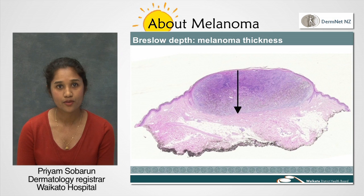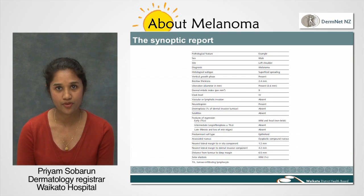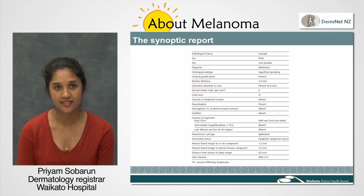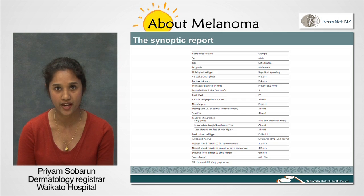The report written by the pathologist is called a synoptic report. It presents information in a tabular form. They ensure that all information required to make management decisions and to determine prognosis is addressed and included in the report. Here is an example.